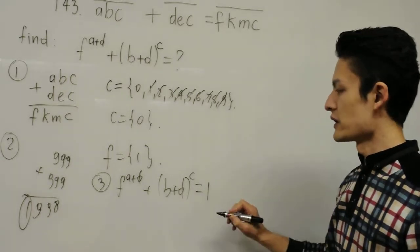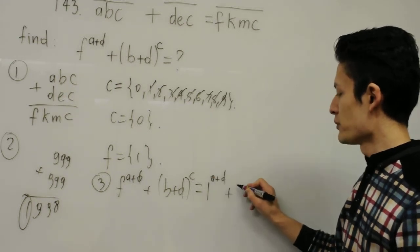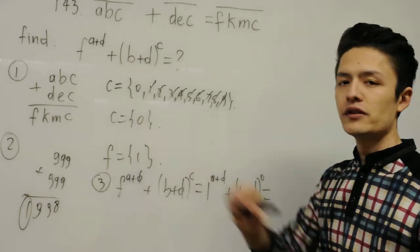And now, yes, we plug in the values. F is equal to 1. 1 to the A plus D plus B plus D to the 0. Why? Because C is 0.